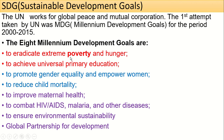The eight MDG goals are: to eradicate extreme poverty and hunger; to achieve universal primary education; to promote gender equality and empowerment of women; to reduce child mortality; to improve maternal health; to combat HIV/AIDS, malaria and other diseases; to ensure environmental sustainability; and global partnership for development.